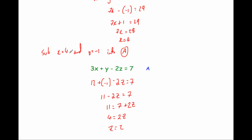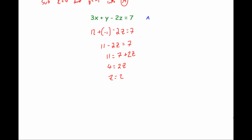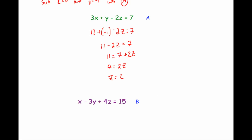We've got our values: x equals 4, y equals minus 1, and z equals 2. A lot of students would stop here, but I highly recommend checking these values. If you're tight for time in an exam you might move on, but particularly for homework it's nice to verify. We've used equation A to find z, so let's check using equation B.